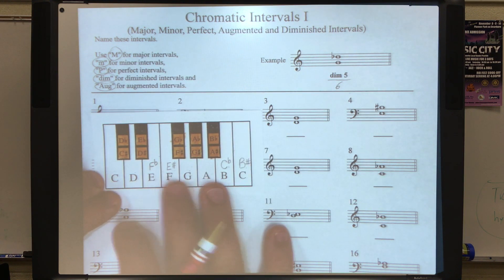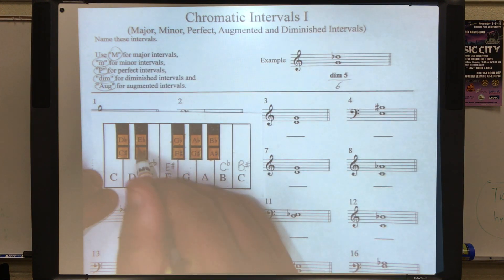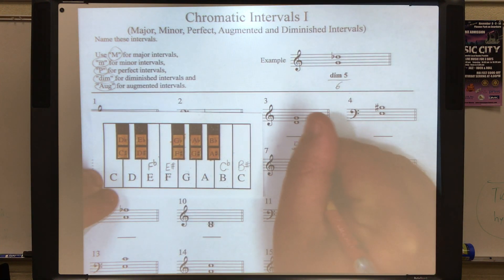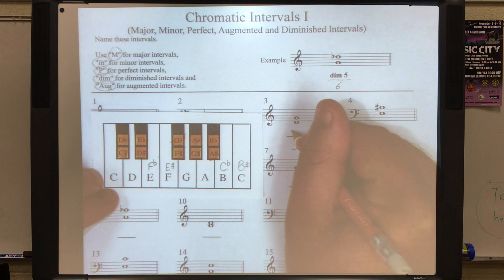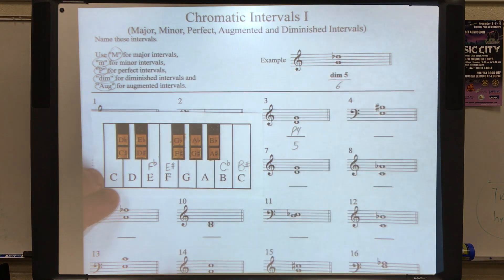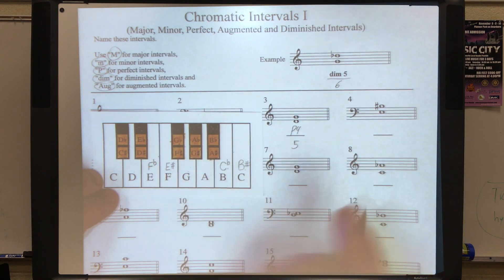Number three. We've got a D to a G. Zero, one, two, three, four, five. Five half steps. We know that five half steps is a perfect fourth. And again, this is all readily available through your table that I gave you.